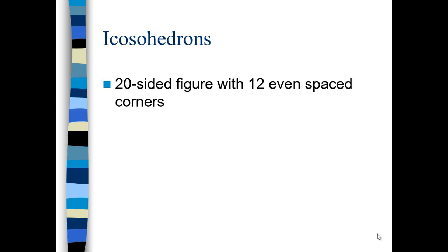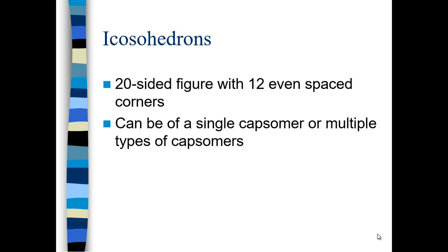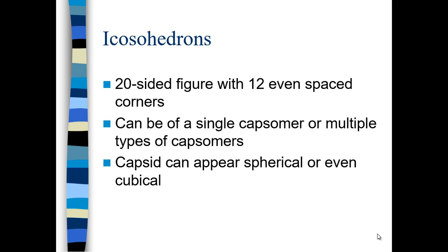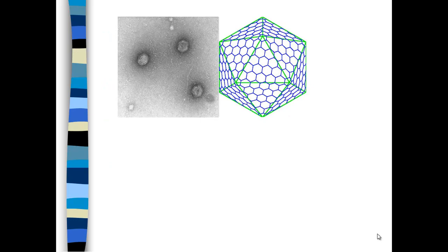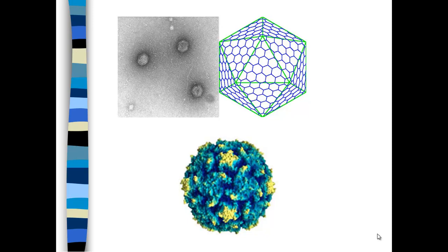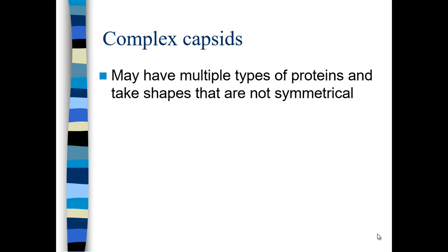Icosahedrons are 20-sided figures with 12 evenly spaced corners. They can be a single capsomer unit for all 20 faces, or there can be multiple types of capsomers encoded by different genes on the virus nucleic acids. The capsid mostly appears spherical; some can appear even cubical. This, I believe, is poliovirus — you can see the different capsomers that have made the 20-sided icosahedral capsid. This is a protein structural diagram where each capsomer is made out of a different protein.